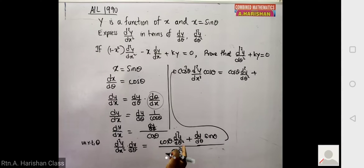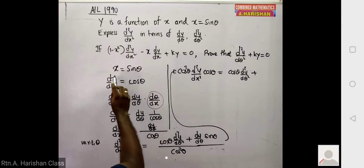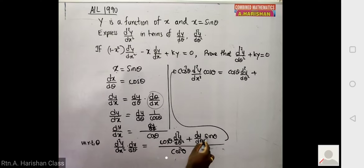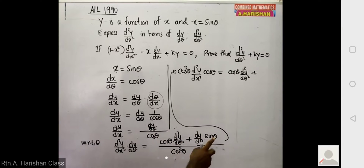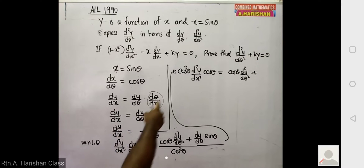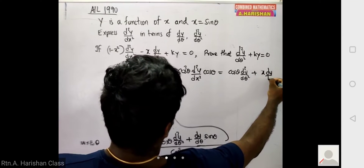Adding the remaining term: plus dy/dθ times sin θ, and since sin θ equals x, we substitute sin θ equals x. So the right-hand side becomes cos θ times d²y/dθ² plus x times dy/dθ. We differentiate both sides with respect to θ: keep the first term and differentiate the second, keep the second and differentiate cos θ giving minus sin θ, then cross-multiplying cos θ gives the result with sin θ substituted as x.